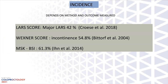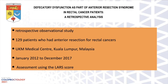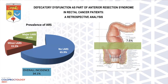The incidence of LAS depends on the method of assessment. Using the LAS score, major LAS occurs in up to 42% of patients. Using the Wexner score or the MSK score, findings differ across studies. It is safe to say that 80% of all low rectal cancer surgery patients will have some symptoms. In our retrospective observational study at UKM of 129 patients over 5 years, up to 34% had some form of anterior resection syndrome, of which 18% had major LAS. Not surprisingly, the lower the anastomosis, the higher the incidence of LAS.